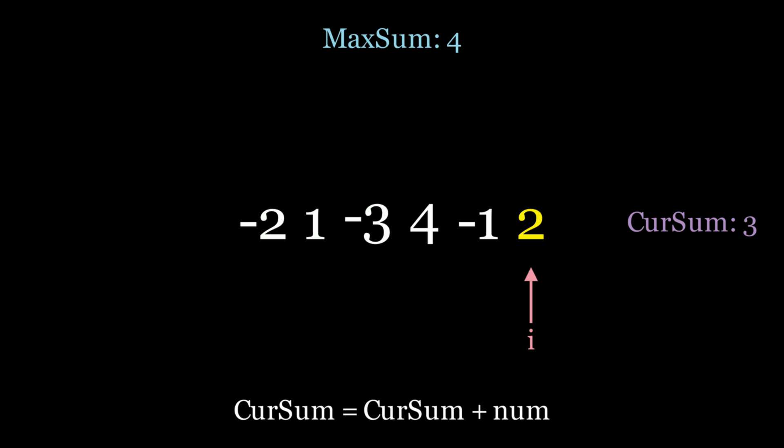Now we're at 2. Cur sum is going to be 3 plus 2, which is 5. Now is 5 greater than 4, which is the max sum? It is, so let's update the max sum. Max sum is now 5. And then we're done the algorithm, right? So the max subarray sum is 5.